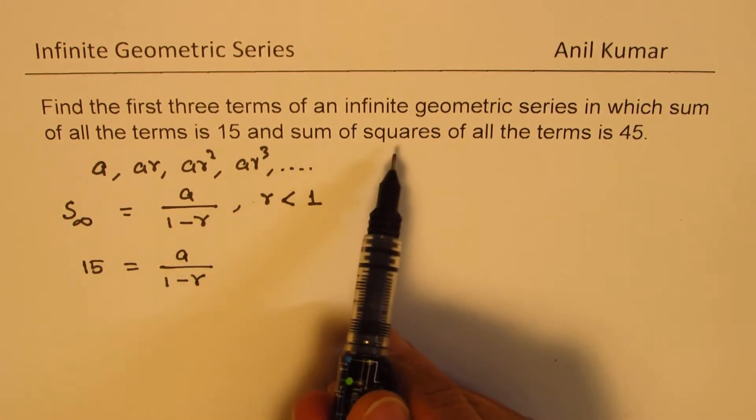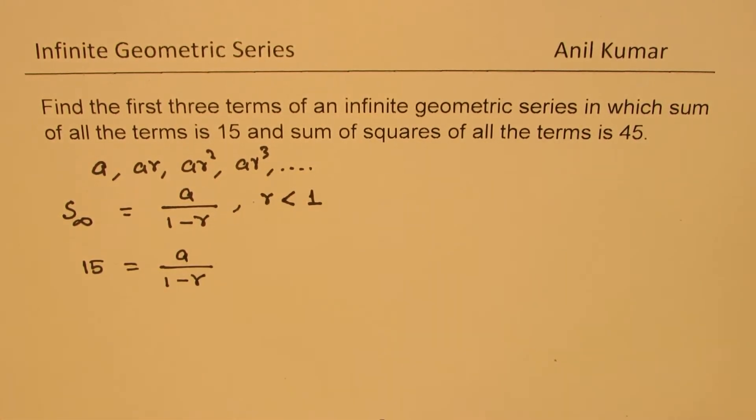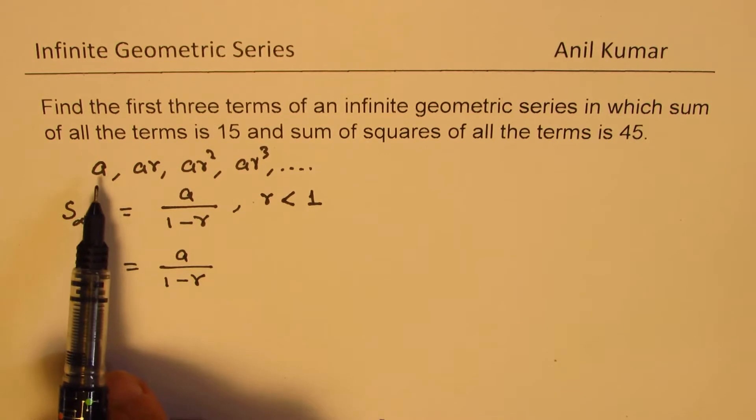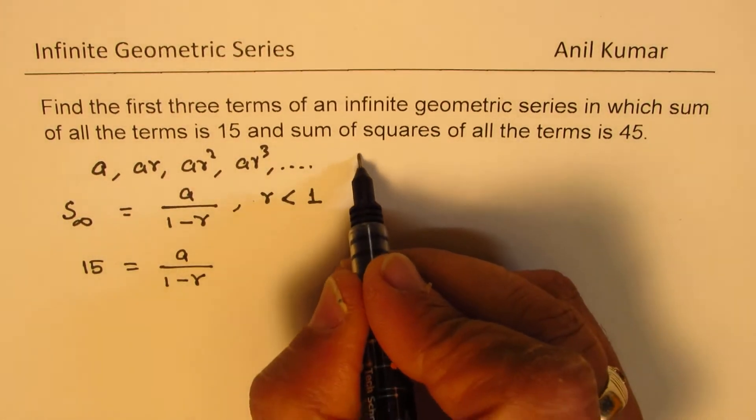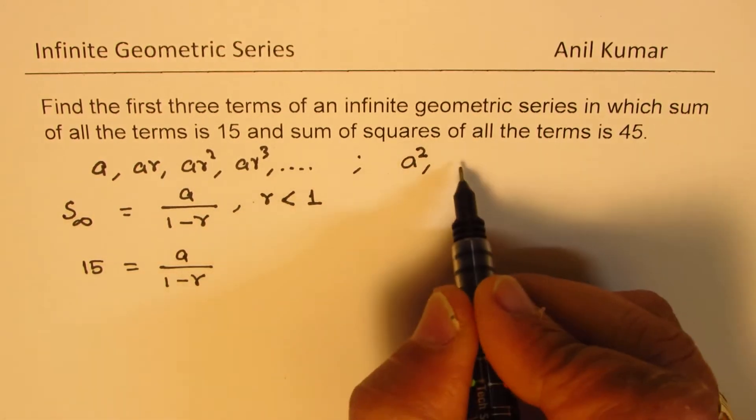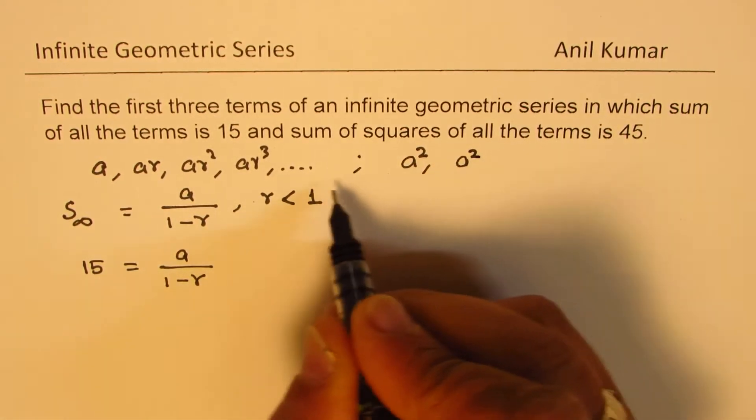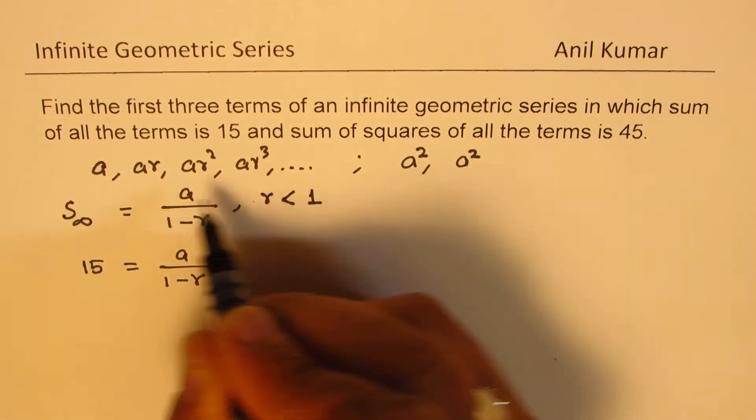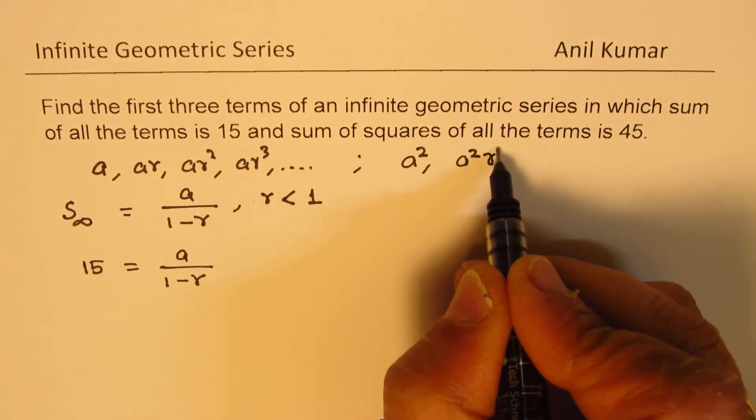Now it says sum of squares of all the terms is 45. So if I square them, then the series will become A square. The first term is A square, and the product will become R square.